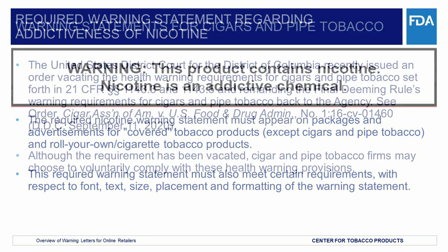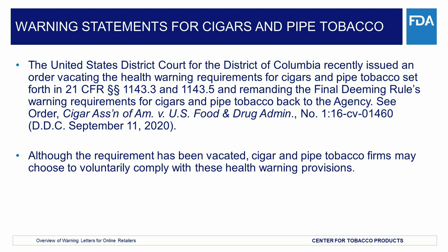The United States District Court for the District of Columbia recently issued an order vacating the health warning requirements for cigars and pipe tobacco set forth in 21 CFR Sections 1143.3 and 1143.5, and remanding the final deeming rule's warning requirements for cigars and pipe tobacco back to the agency. See order: Cigar Association of America v. FDA, No. 1:16-CV-1460 (D.D.C.), order dated September 11, 2020. Although the requirement has been vacated, cigar and pipe tobacco firms may choose to voluntarily comply with these health warning provisions.